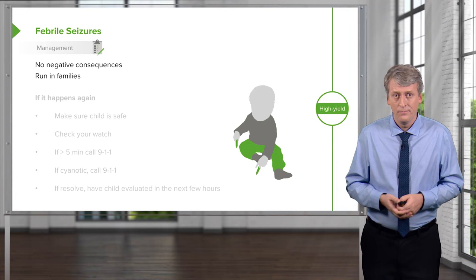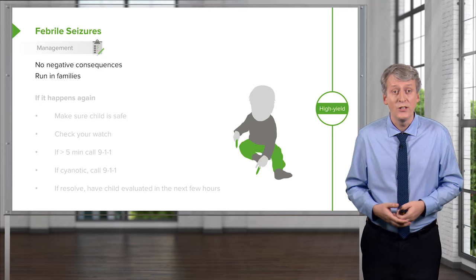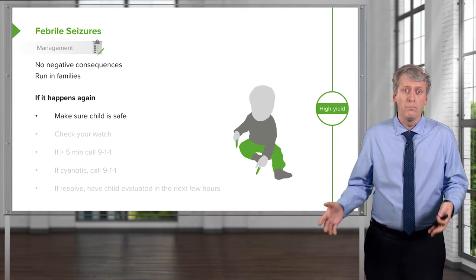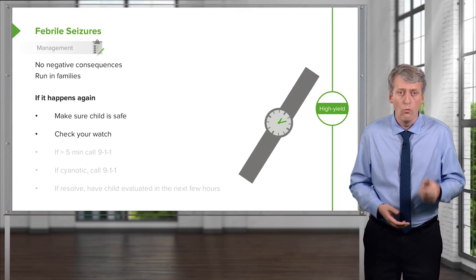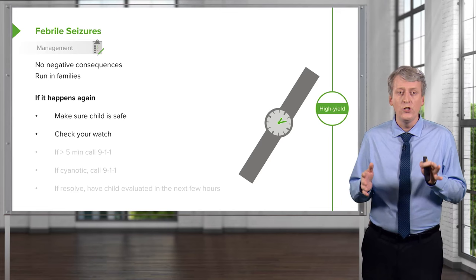When seeing a family whose child has had a first febrile seizure, it's important to counsel them about what to do if it happens again. First, make sure the child is safe — if they're near a fireplace or in a swimming pool, pull them to a safe location. Next, tell the family to check their watch. Knowing how long a seizure has gone on is very important in deciding what to do, so tell the family to check the time.